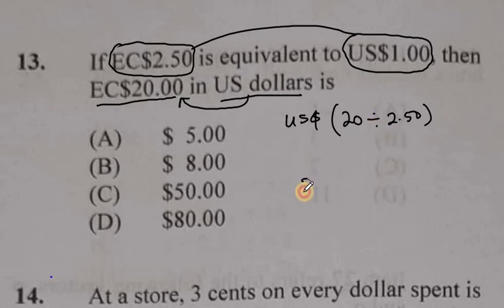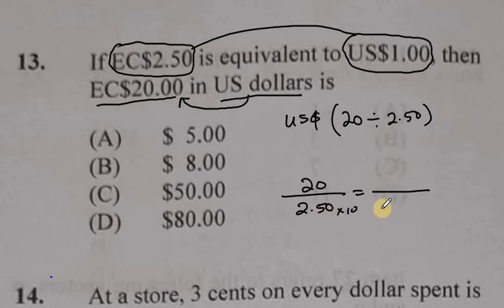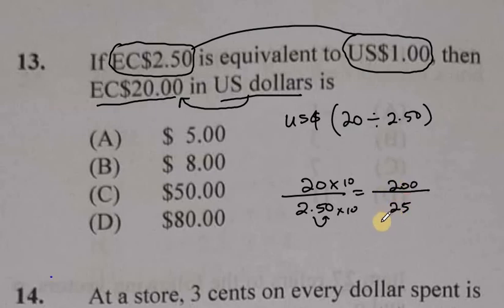So how do we do that? We can say 20 divided by $2.50. And we want to work with a denominator that's a whole number. So we can say, why not multiply by 10? That will move the point one place to the right, giving us 25. If you multiply the denominator by 10, you've got to do the same thing to the numerator to make it equivalent. That's going to be 200 — move the point one place to the right on 20, so that's 200.